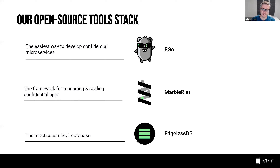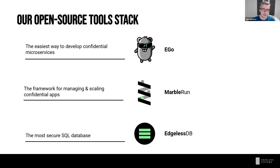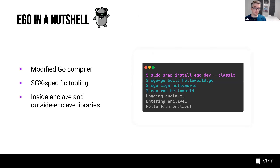EGo is a framework and SDK for programming secure enclaves in Go. We also have Marble Run, for scaling confidential apps in a cloud-native sense, and EDB, which is essentially a SQL database running inside a secure enclave. All of this is open source.